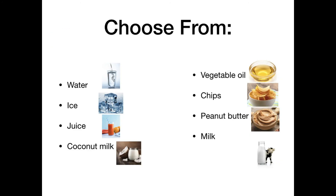You could try out coconut milk, vegetable oil, or chips on your own. But peanut butter is a representative example and milk is too. The result we have is that peanut butter and milk both work. The coconut milk, vegetable oil, chips, and peanut butter all work. And as you can see, milk works really well. So why is that?